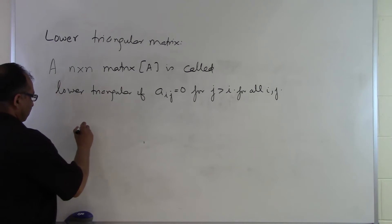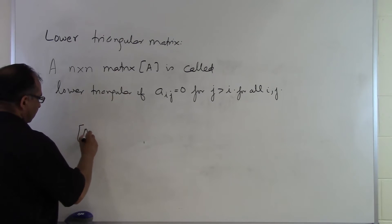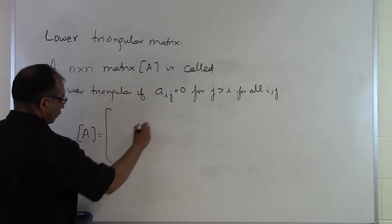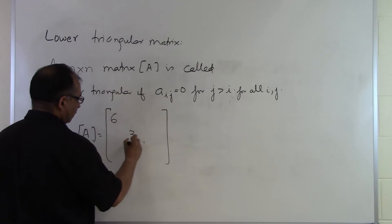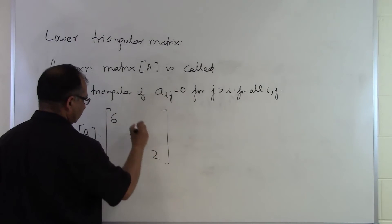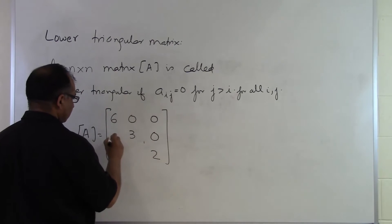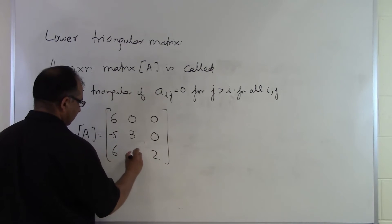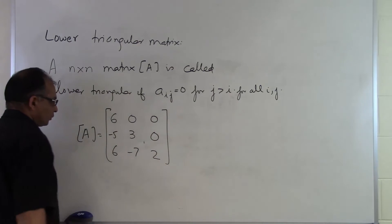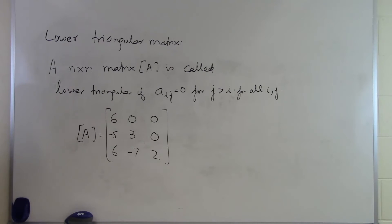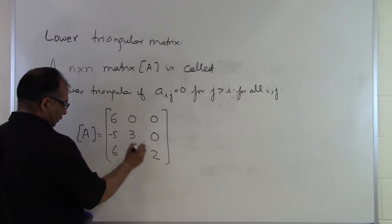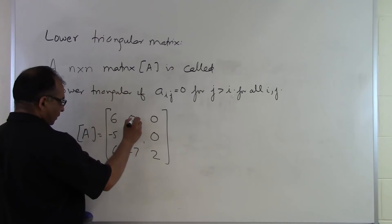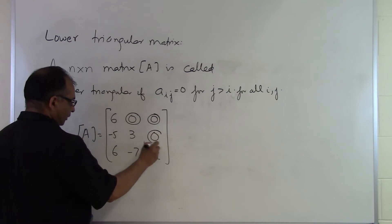This will be clear once we look at an example. So we have a matrix with entries 6, 3, 2 in the first row; 0, 0, 0 — wait, minus 5, 6, minus 7. This is a lower triangular matrix because the elements which are above the diagonal are all zero — right here, right here, and right here.